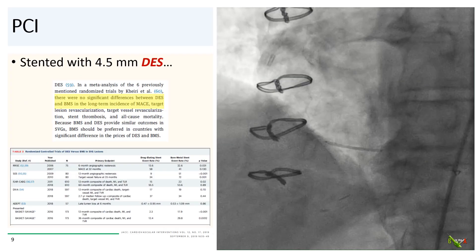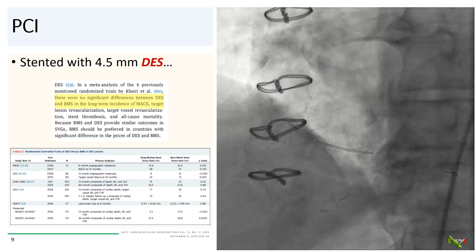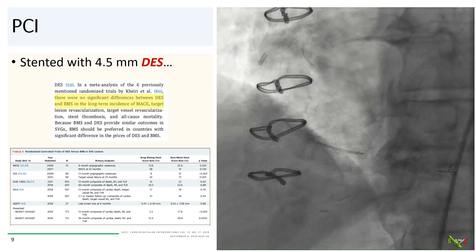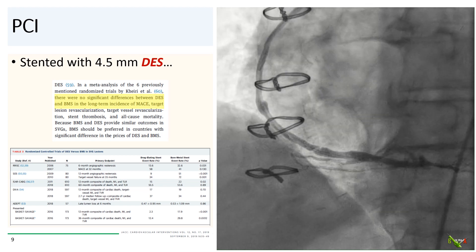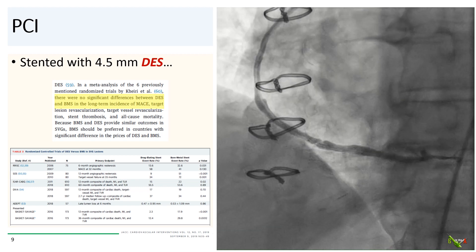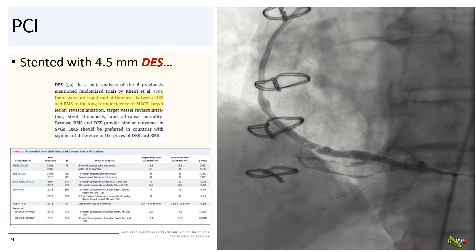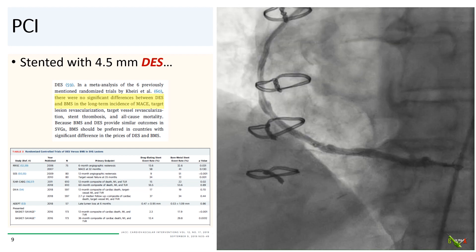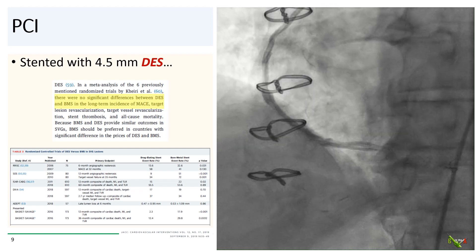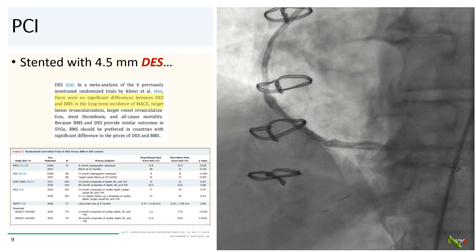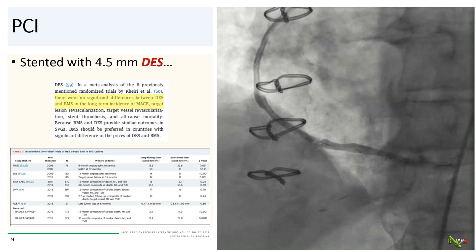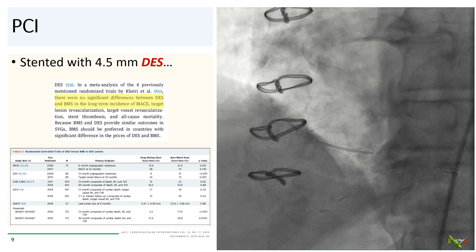PCI was quite straightforward, and based on the dimensions of the SVG on the OCT, we stented it with a 4.5 mm drug-eluting stent. I should note that the use of DES in SVGs is by no means a foregone conclusion. In fact, there is data to suggest that bare metal stents do just as well as drug-eluting stents in saphenous vein grafts. A recent meta-analysis of six randomized trials suggested no significant difference between DES and BMS in terms of MACE, target lesion revascularization, stent thrombosis, or mortality. So in the 2019 practice recommendations update, BMS was suggested as the preferred stent for SVGs in situations where price of the stent is a major concern.